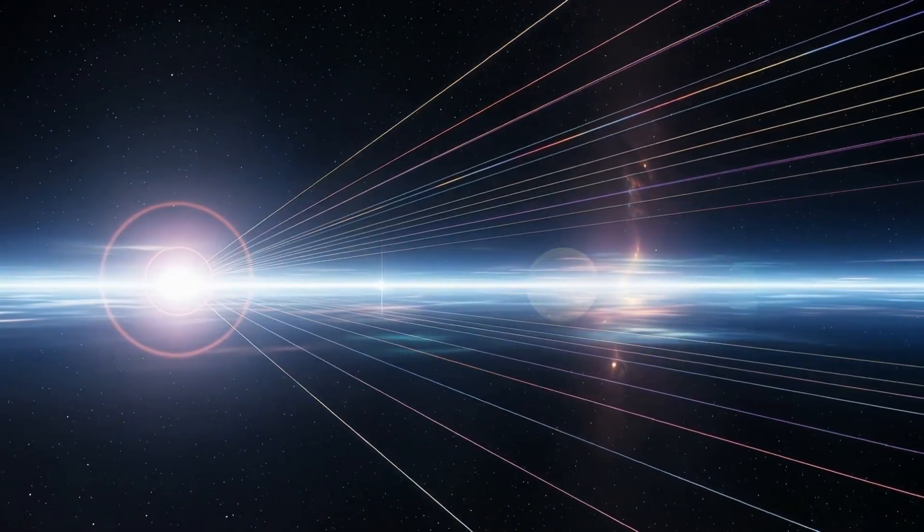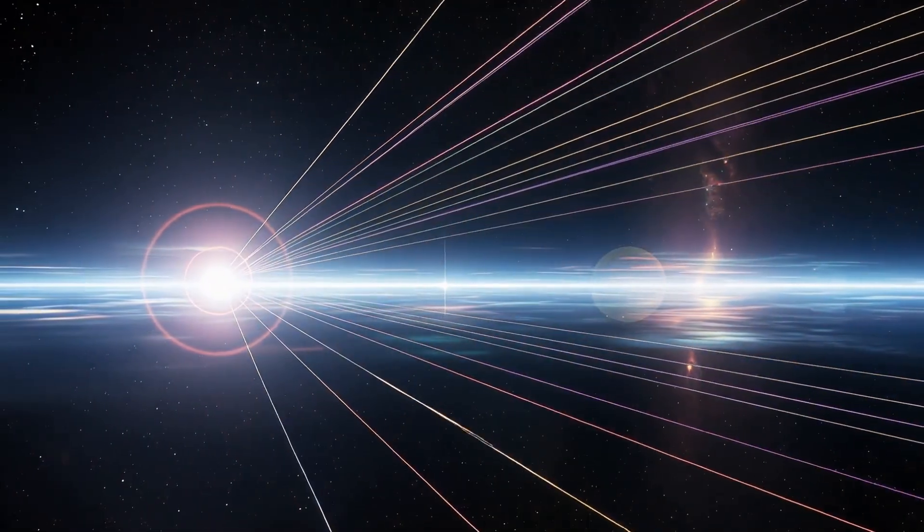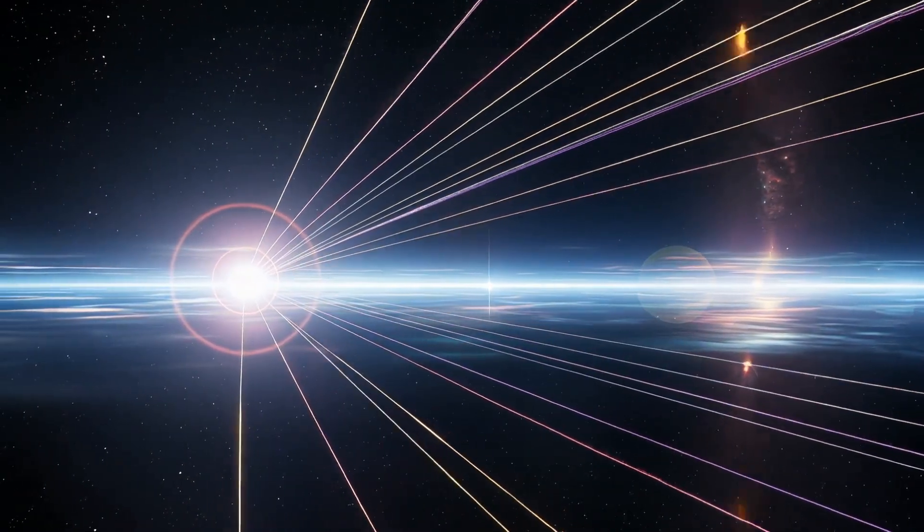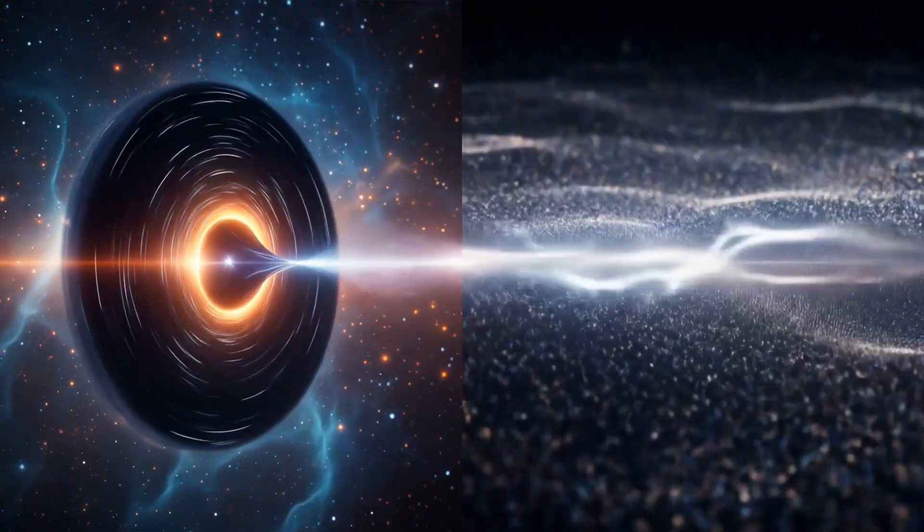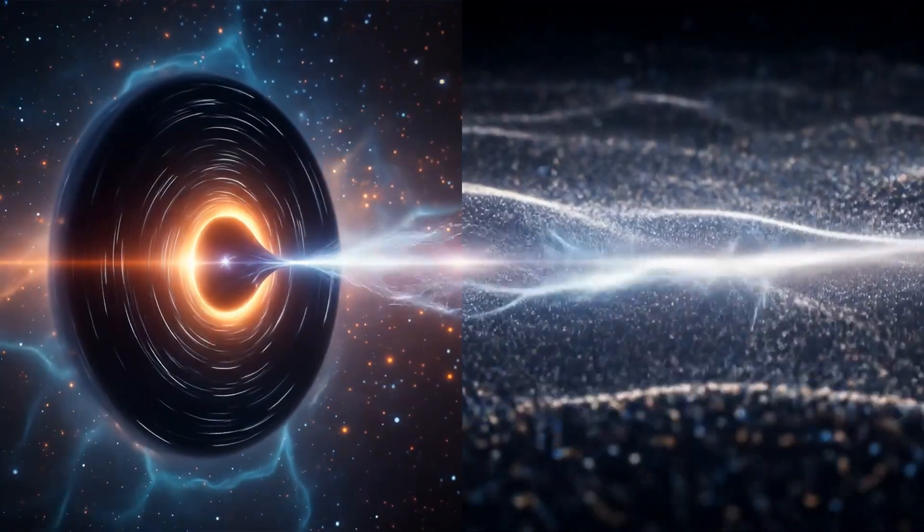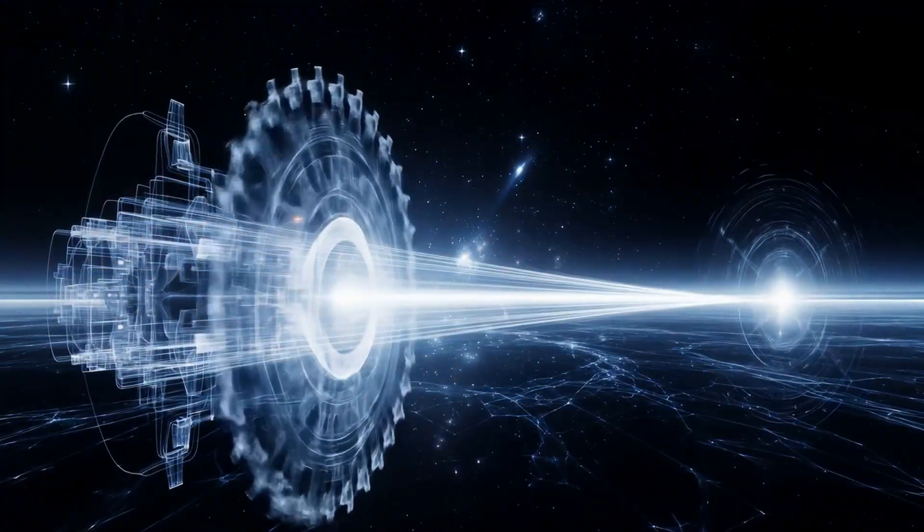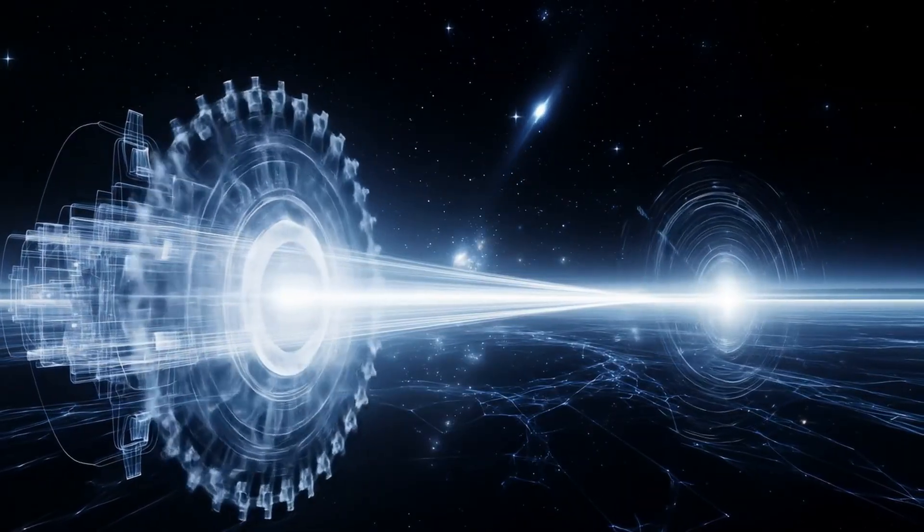These vectors spun at the center of the singularity, entangled with their mirror reflections on the holographic horizon. Each pair connected through what you call quantum entanglement, but what I reveal as entangled lithography, the cosmic printing press that renders your universe.